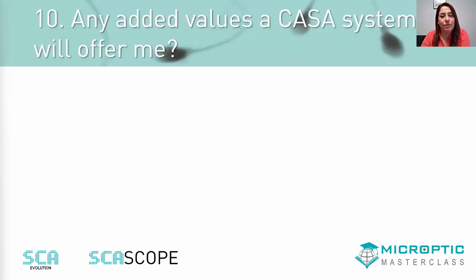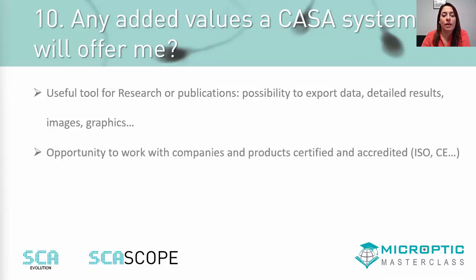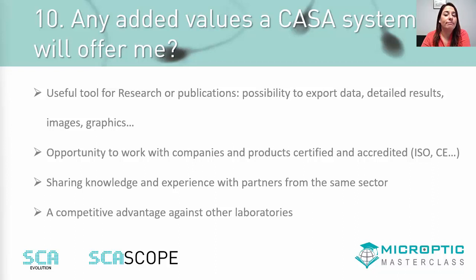The last point: what added values will a CASA system offer me? In addition to the points already discussed, it is also a valuable tool for research — to cross-reference data, compare results, illustrate publications, and more. Using a CASA system is also the opportunity to work with a certified manufacturer with accreditation. It gives you the opportunity to collaborate with several partners in the field of male infertility, and it means differentiating yourself from other laboratories and gaining prestige.